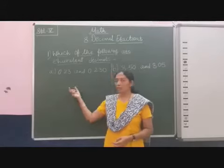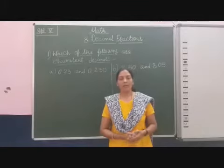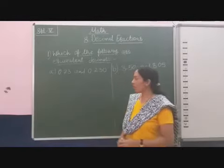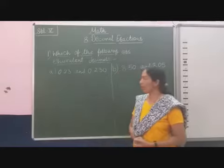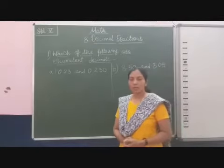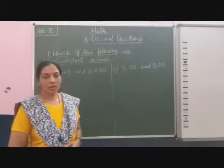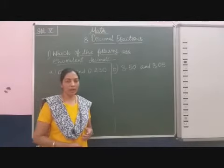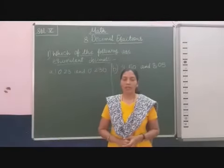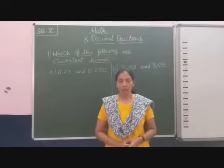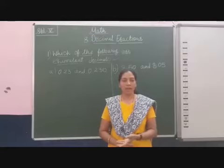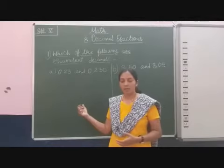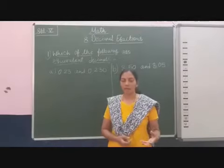Students, here two decimal numbers are given and we have to check that these decimal numbers are equal or not. See that 0.23 and 0.230. We have to compare these, same as what we covered earlier about comparing decimal numbers using the greater, lesser, and equal to sign. So the same thing we have to do here — either these two decimal numbers are equal or not.